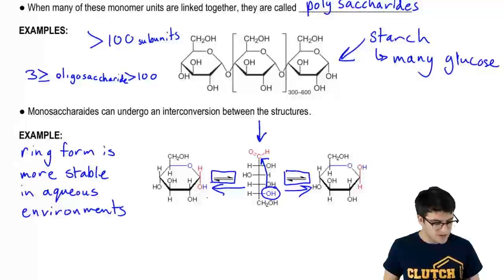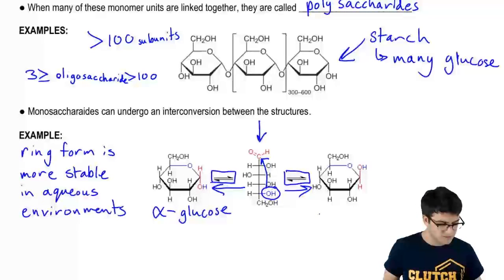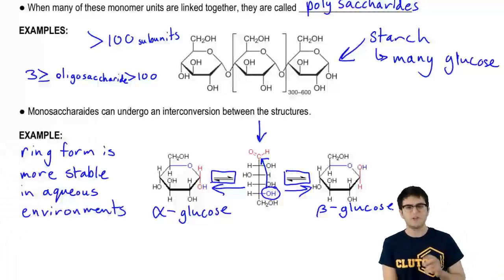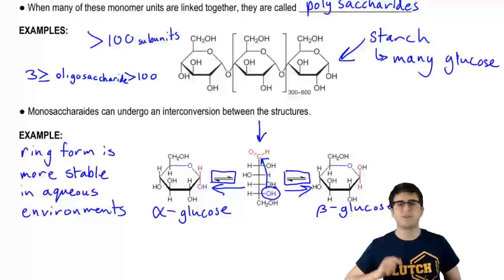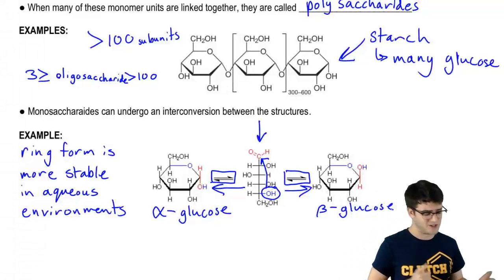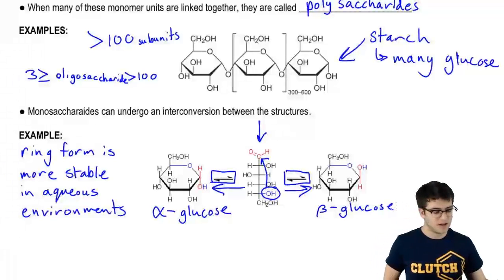There's one last thing I need to tell you before we turn the page. These two different forms of glucose that we see here have special names. When the hydroxyl group is in this particular conformation on the left, we call that alpha glucose. When it's in this conformation on the right, we call that beta glucose. You definitely don't need to worry about how to distinguish between alpha and beta glucose—that's something you learn about in organic chemistry. For now, just know that there's a difference between them, and we're actually going to revisit this idea and talk about why this difference is important in just a moment.